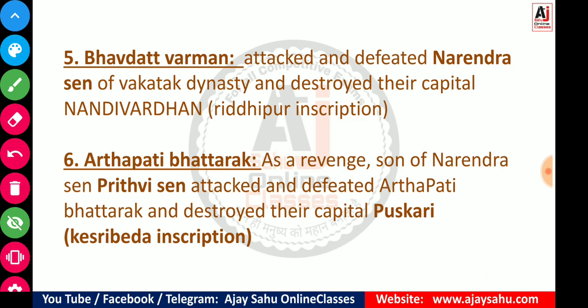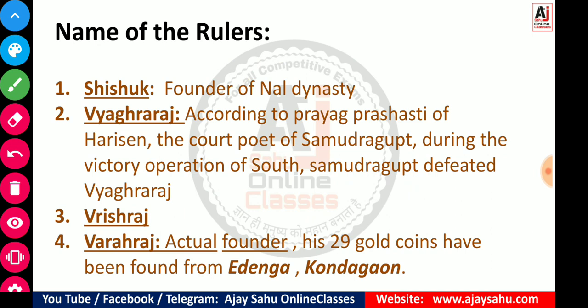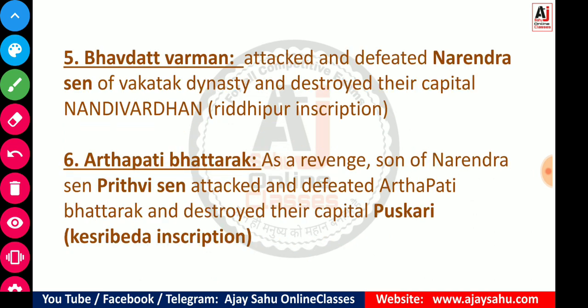To summarize the first four rulers: Shishuk (founder), Vyagra Raj (mentioned in Prayag Prashasti — defeated by Samudragupta), Vrish Raj (third, just remember the name), and Varah Raj (fourth, actual founder). We should remember rulers in groups of 3 to 4 to make it easier. Now let's look at the next three rulers together: Bhavadat Varman, Arthipati Bhattarak, and Skand Varman.